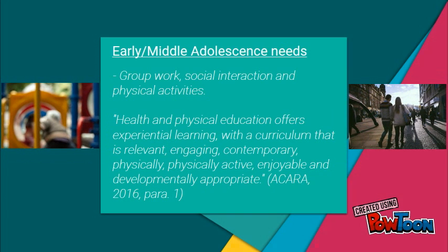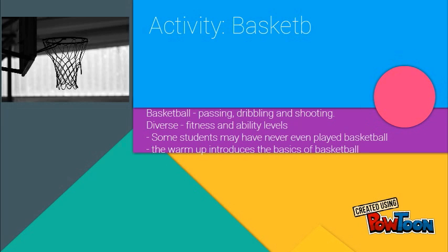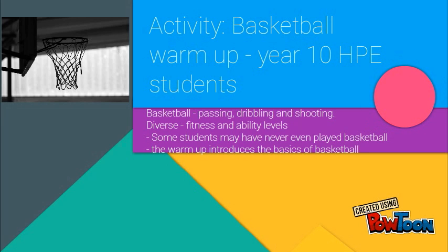The activity we will be focusing on in this presentation is a basketball warm-up activity for year 10 students. This activity will involve the three basic elements of basketball: passing, dribbling and shooting. As a warm-up activity, it also involves a small amount of running over a short distance. With a class of 14 to 16 year olds, there is going to be a range of different ability and fitness levels. Even at this age, there is a distinct possibility of a student never having played basketball in their life. Therefore, it is important that this drill, while it still focuses on the skills of basketball, is simple enough to be understood by someone with little knowledge of the game.